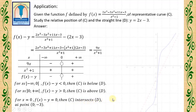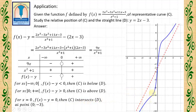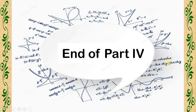Now we can see this result graphically. This is the curve of the function F, and this is the line D with equation Y = 2X minus 3. For X belongs to (minus infinity, 0), the curve C is below line D. For X belongs to (0, plus infinity), the curve C is above line D. And for X equals 0, the curve C intersects line D at the point with coordinates (0, minus 3). Thank you for watching.